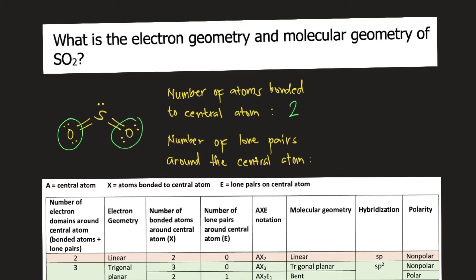Then we count the number of lone pairs around the central atom. When you say pair, it has two electrons. In a Lewis structure, a lone pair is represented as a pair of two dots. How many lone pairs around sulfur? We only have one pair. So one lone pair around the central atom.